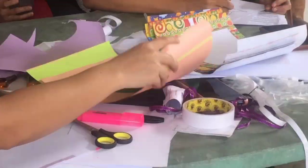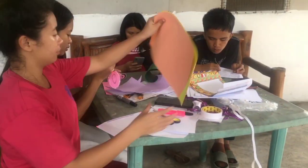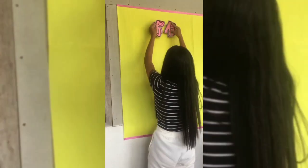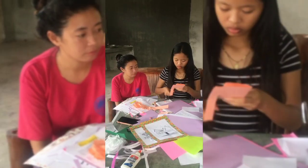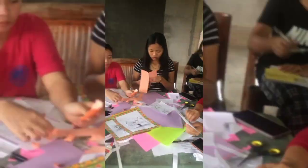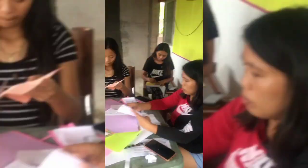Third, we used scissors to cut and make pink paper flowers and ribbon and paste them as borders. Then we put the lettering name of our instructional material, which is Proud Wall.